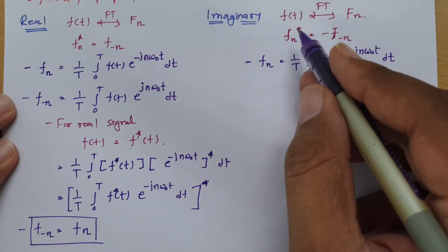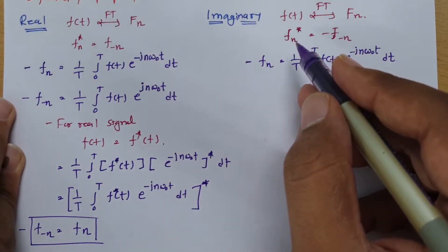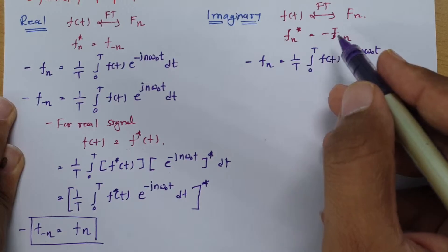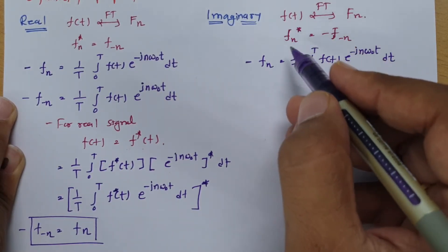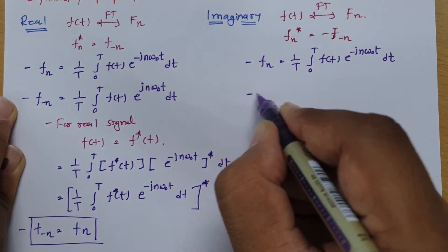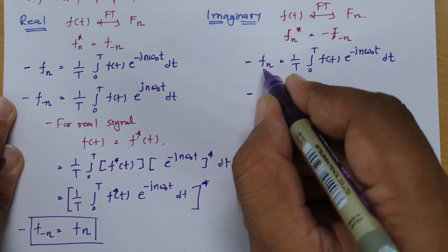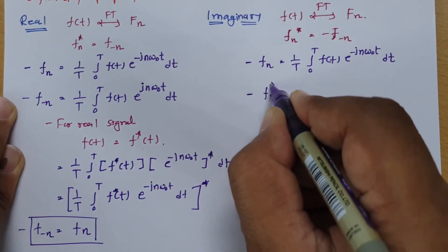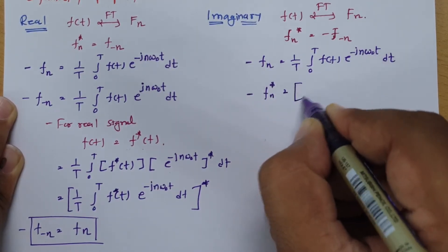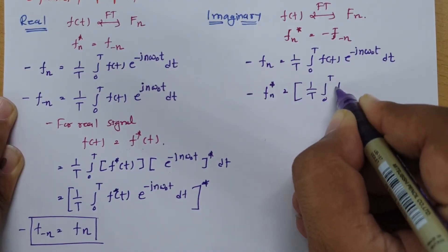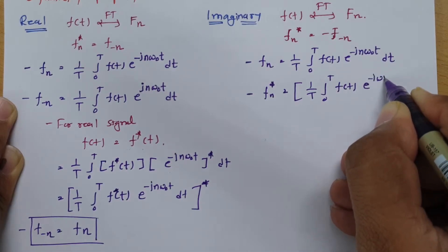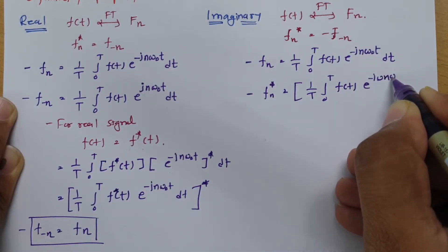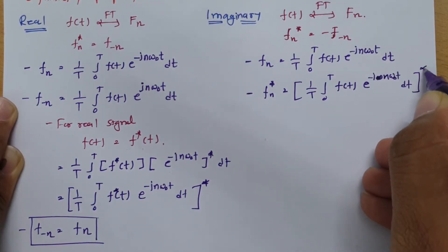Now, to derive the relation for imaginary signals — that the conjugate of F(n) equals negative F(−n) — I'll start by taking the conjugate of F(n), which is the conjugate of the complete expression: (1/T) × integral from 0 to T of f(t) × e^(−jnω₀t) dt.